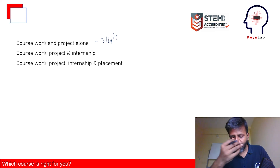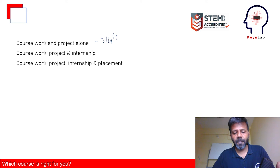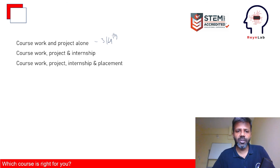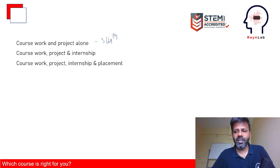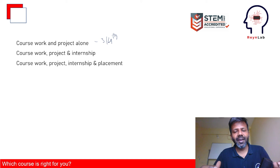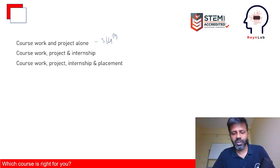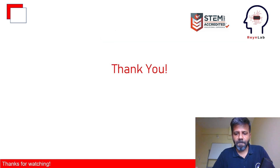The final option also includes a placement service. Once you finish your coursework, projects, and internship, you go onto our payrolls. From there, we have the option to have you work from our Rain Lab offices or place you at client locations. Choose the first option if you're in third or fourth semester; the second if you're in your final semesters and want an internship; and the third — placement guaranteed — if you're already graduated or graduating in the next three months. That's it — thanks for watching, and please get in touch with us.